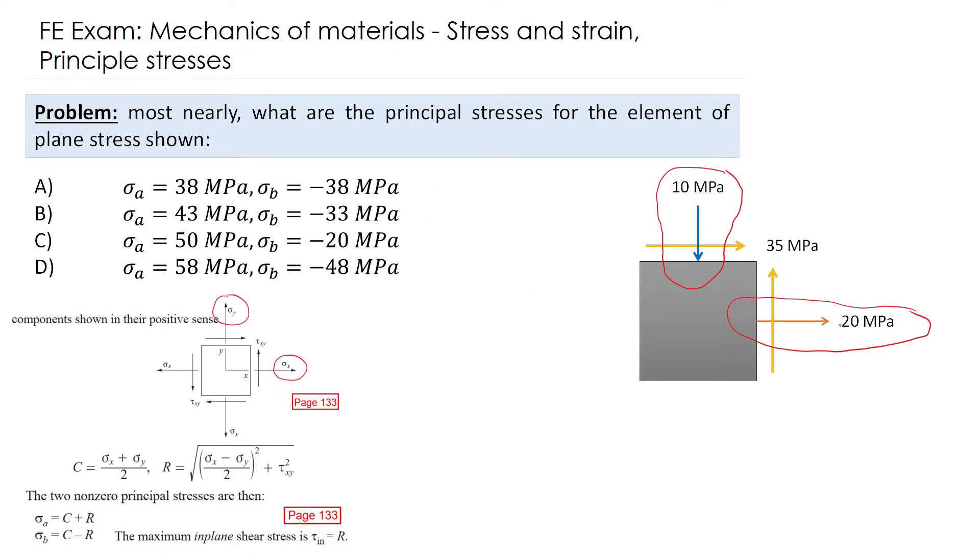So for this 20 mega Pascal, sigma x equals plus 20 mega Pascal. For sigma y, it's coming against its compression, so it's negative 10 mega Pascal. And for the shear, it's 35 mega Pascal, and it's in the positive direction. So tau xy equals 35 mega Pascal.